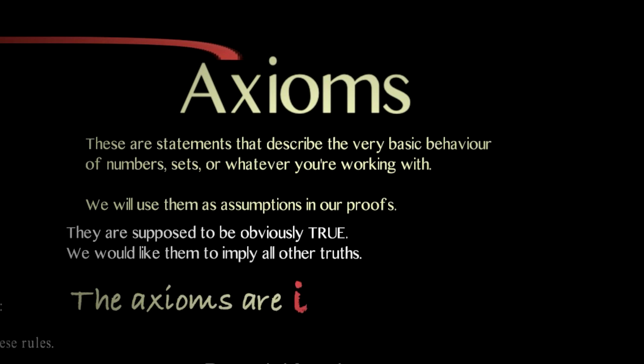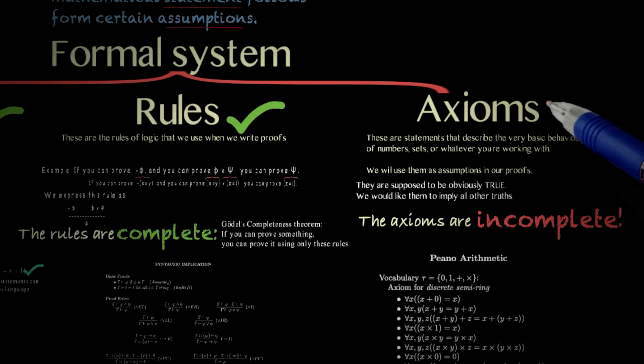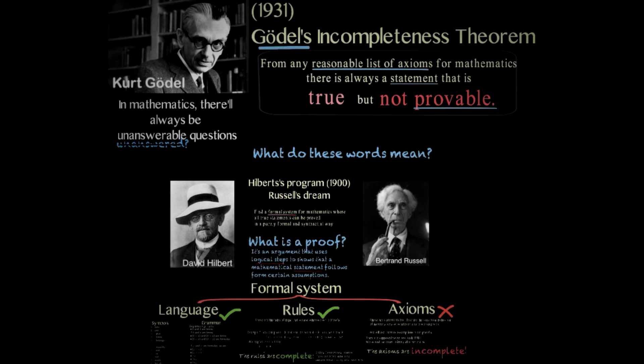The axioms, though, are not complete. And this is what the incompleteness theorem says. Gödel proved both the completeness and incompleteness theorems. It's not that he couldn't make up his mind about completeness or incompleteness. It's just that completeness was about the rules and incompleteness was about the axioms. The incompleteness theorems wouldn't be so important without the completeness theorem next to it. This is because the incompleteness theorem tells us that something cannot be proved. And for that, we need to understand what it means for something to be proved in a formal way. And that's where the rules come in. So the completeness theorem is the one that tells us that the rules actually capture the notion of provability.